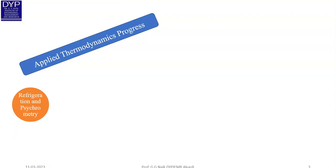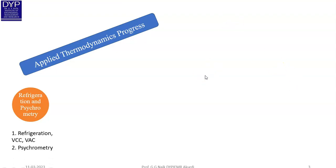In Unit 1, Refrigeration and Psychrometry, we will first study refrigeration, then the Vapor Compression Cycle (VCC) and the Vapor Absorption Cycle. The second part of this chapter covers psychrometry. These two parts are the most important topics in this chapter.